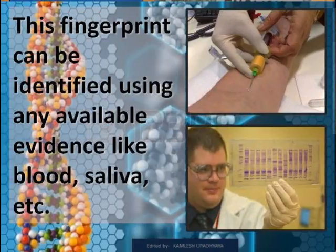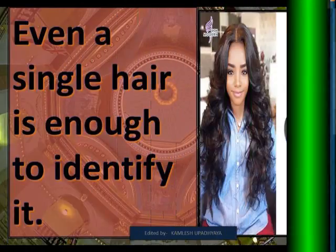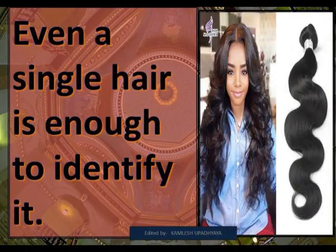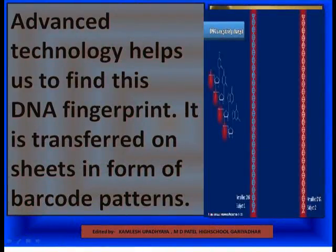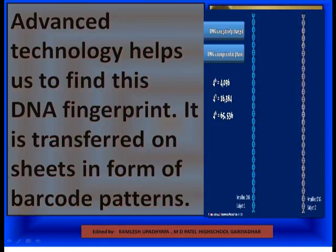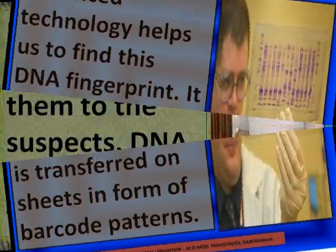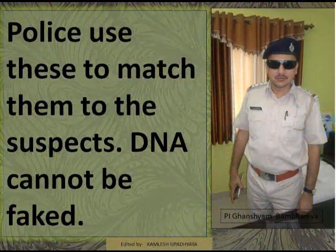This fingerprint can be identified using any available evidence like blood, saliva, etc. Even a single hair is enough to identify it. Advanced technology helps us to find this DNA fingerprint. It is transferred on sheets in the form of barcode patterns. Police use this to match them to the suspect.